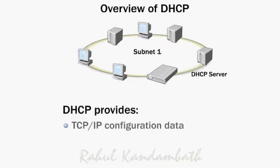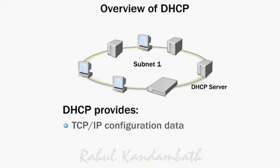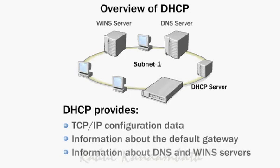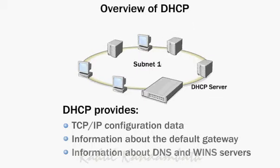In addition to configuring a DHCP server to provide a TCP/IP address and configuration data, you can also configure it to provide clients with additional IP information. This information can include data about the router or default gateway, Domain Name System, or DNS, and Windows Internet Name Service, or WINS, servers.